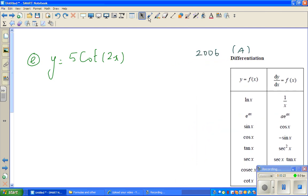It's differentiating using the chain rule. I can say dy by dx. Differentiate the inside first. So that is five times 2 times minus cosec squared 2x. Let us simplify a little. So dy by dx is minus 10 cosec squared 2x.